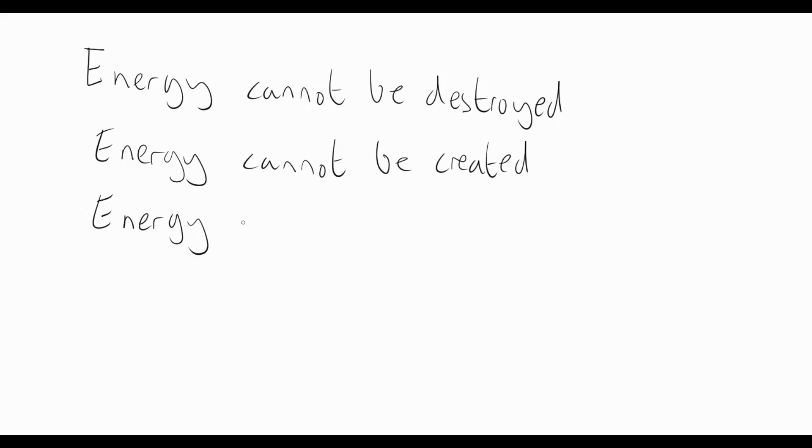The big rule when it comes to energy is the principle of conservation of energy. And this basically states that energy cannot be destroyed. So whatever energy we have, it is impossible to get rid of it. It also says that no new energy can be created. So no matter what we do, we cannot make any brand new energy. Whatever energy we've got in the universe is what we've got. We can't make any new energy. We can't destroy any energy. So what can energy do? Energy, the only thing it can do is it can change between one form and another.